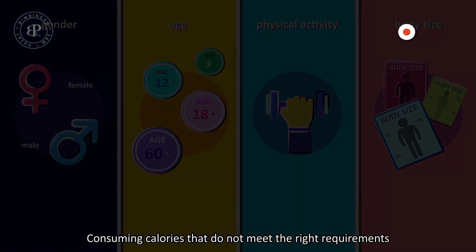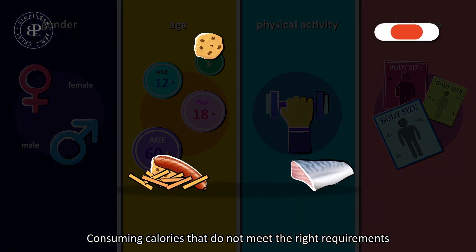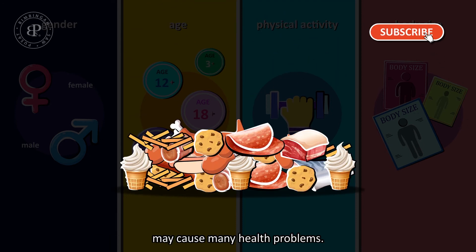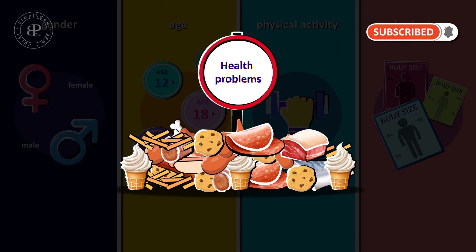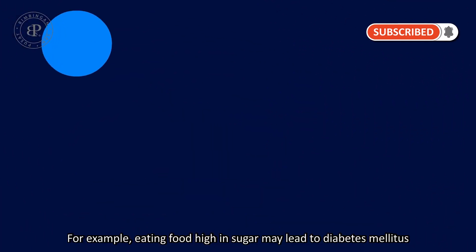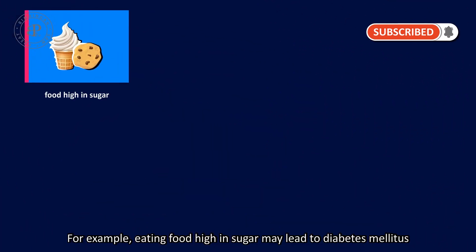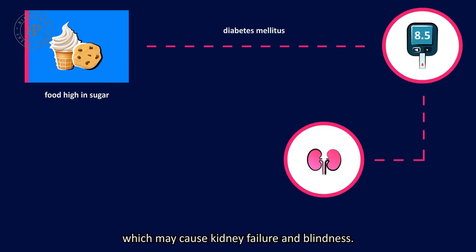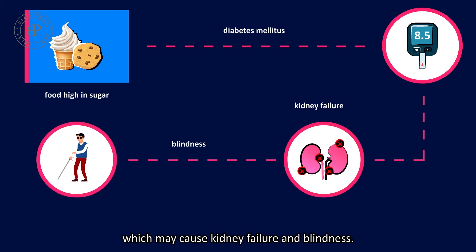Consuming calories that do not meet the right requirements may cause many health problems. For example, eating food high in sugar may lead to diabetes mellitus, which may cause kidney failure and blindness.